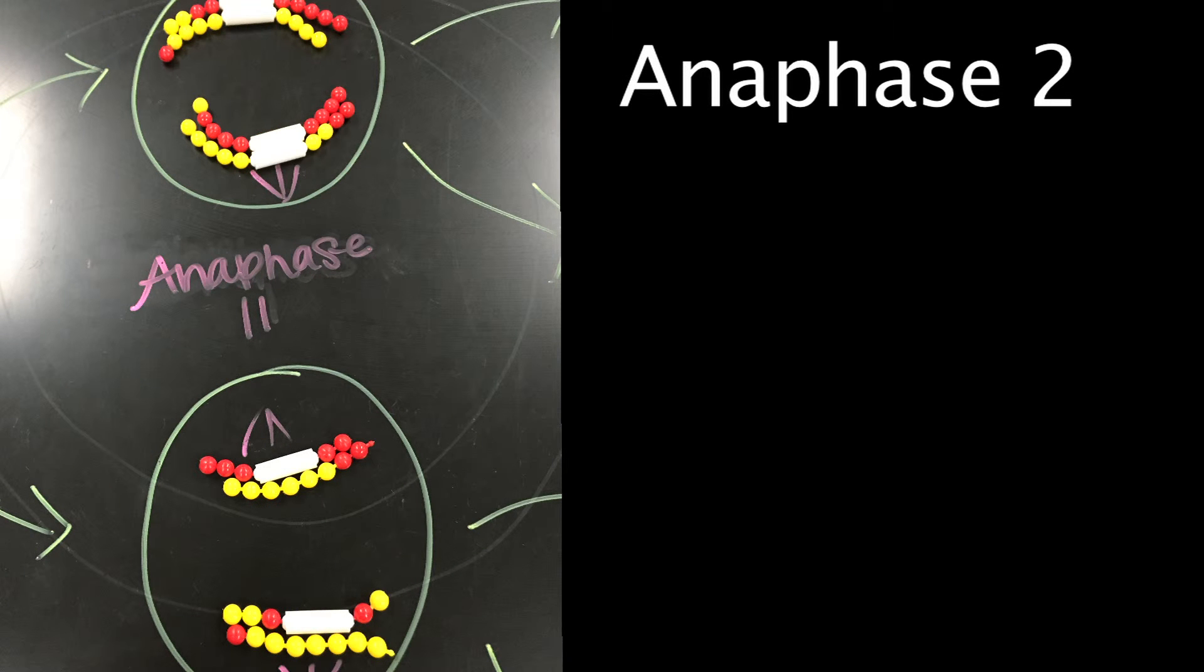During anaphase 2, the sister chromatids of each chromosome separate and move toward opposite poles. Once they are no longer connected, the former chromatids are called unreplicated chromosomes. As the chromosomes are dragged along by the spindle apparatus, their arms can be seen dragging behind so that the chromosomes form V-shapes. The poles themselves move further apart as cytokinesis begins and the cell lengthens.